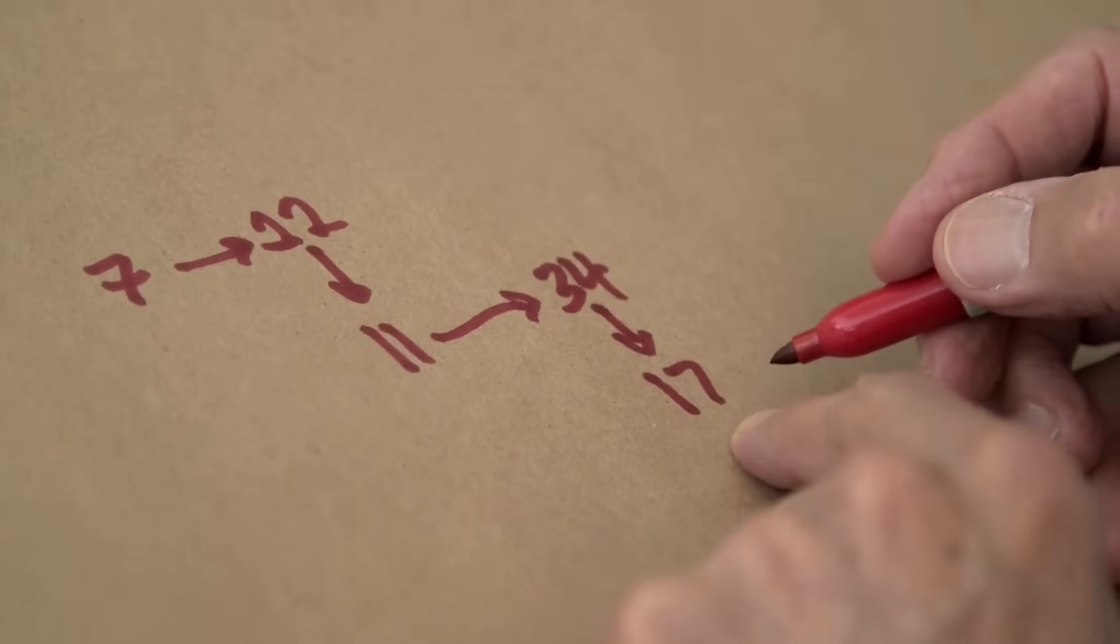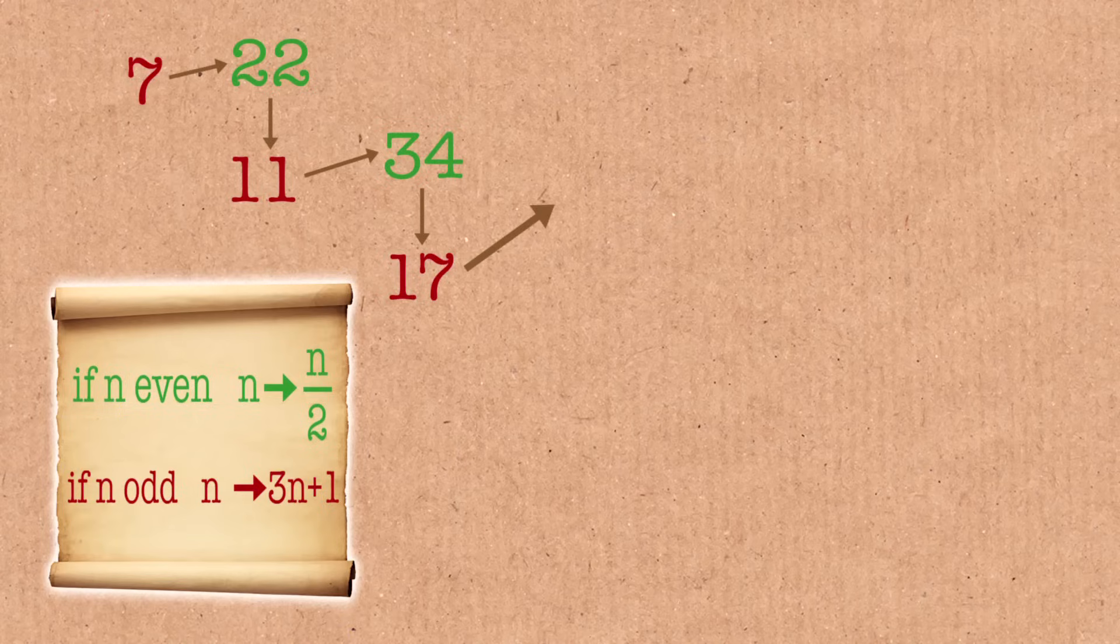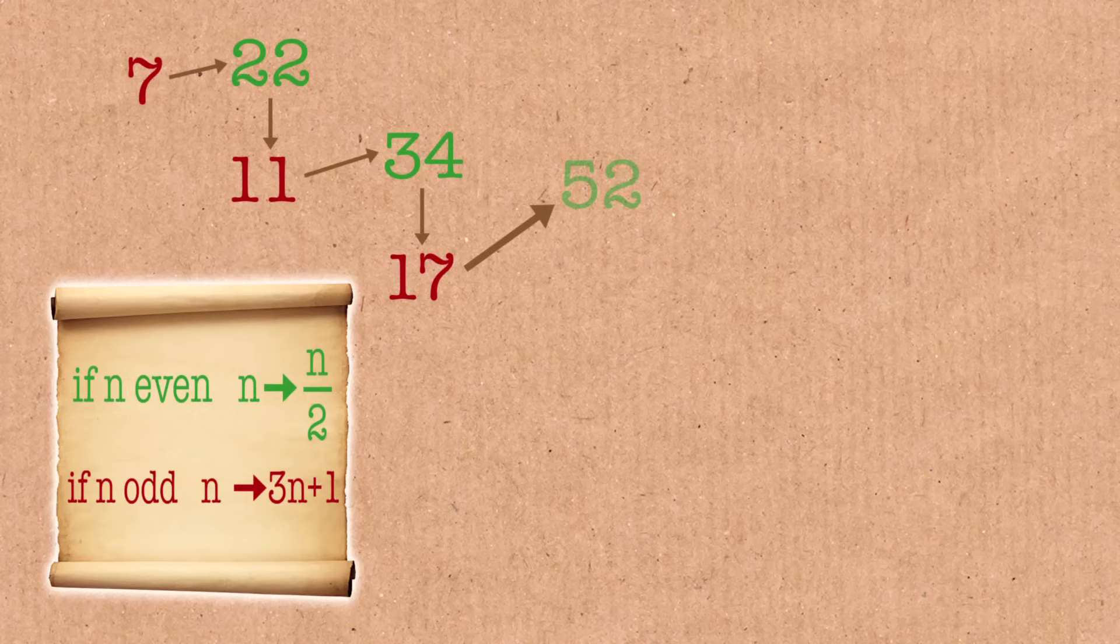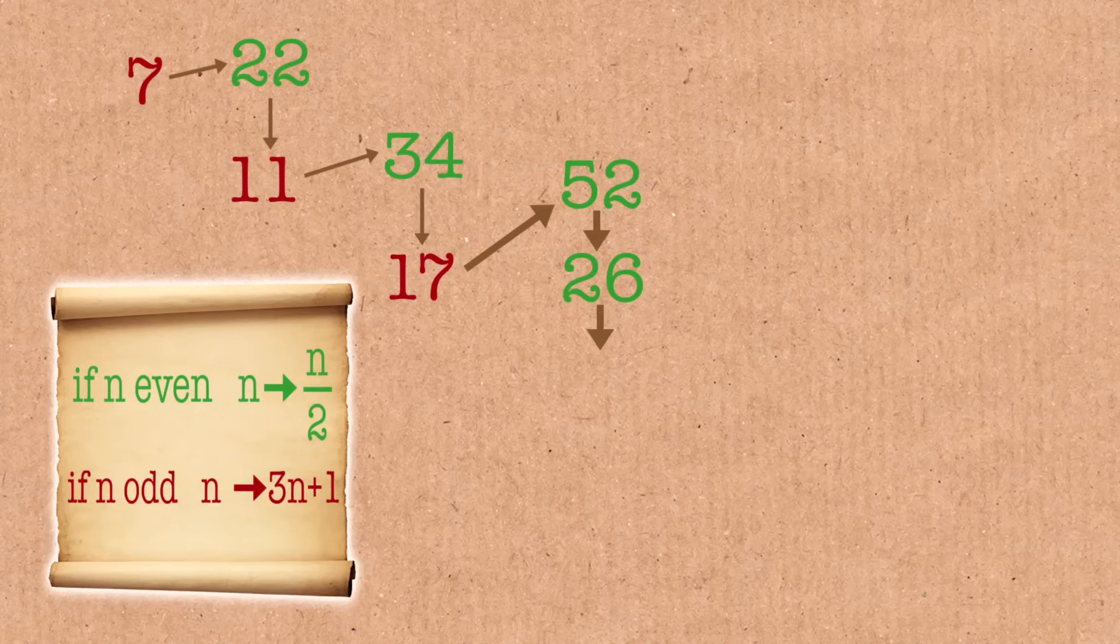17, so 17 is odd. I multiply by 3. 3 times 10 is 30, 3 times 7 is 21, 51 plus 1 is 52. Even. Divide by 2 and get 26. Still even, divide by 2 again and get 13. Now it's odd, multiply by 3 and add 1, 40.